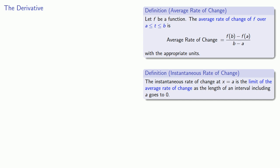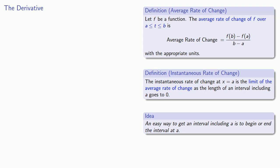Since that instantaneous rate of change is always at some particular point, one important feature is that we want to make sure that we have an interval that contains that point, and the easiest way to do that is to either begin or end the interval at the point we want.